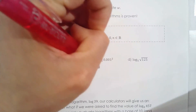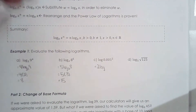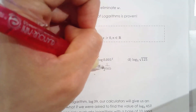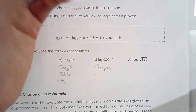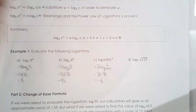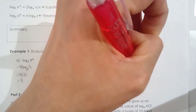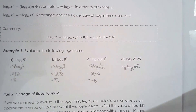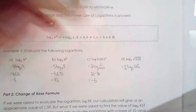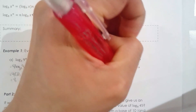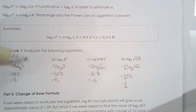We can also use the power law for log of 0.001. Writing it as one over a thousand makes it clear that 10 to the negative 3 gives one over a thousand, so the answer is negative 6. For log base 5 of the square root of 125, the square root is a rational exponent of one half. Applying the power law: since 5 cubed is 125, the answer is three over two. You can use your calculator to check.